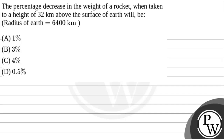Hello! Let's read the question. The question says: what is the percentage decrease in the weight of a rocket when taken to a height of 32 km above the surface of the Earth? The radius of the Earth is equal to 6400 km.